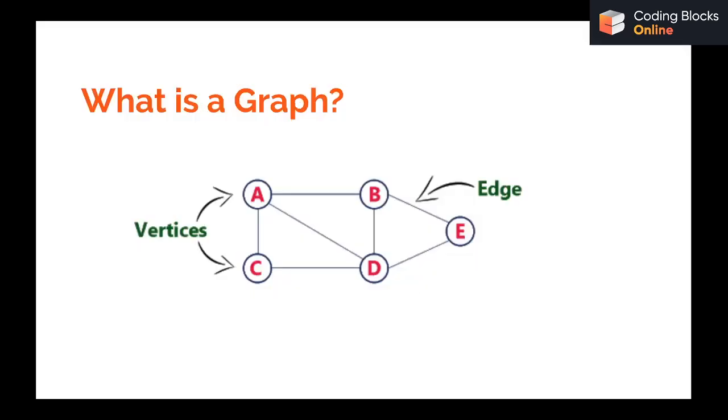A graph is a data structure that is like a network. You can see it's a network containing five vertices and some edges that connect these nodes. It's a non-linear data structure, not like a list or array, but a network-like data structure.